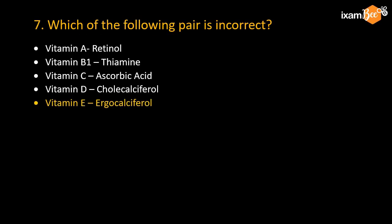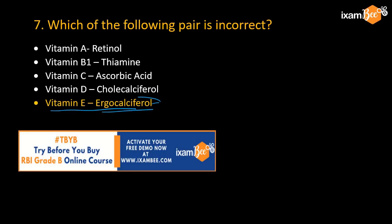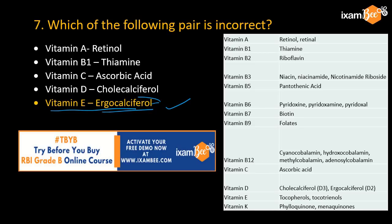Ergocalciferol actually belongs to a type of Vitamin D. Here is the complete list of vitamins: Vitamin A, B1, B2, B3, B5, B6, B7, B9, B12, C, D, E, and K. It depends on how much you can remember, but at least you should know A, B1, B2, B6, B12, C, D, E, and K and their scientific names.